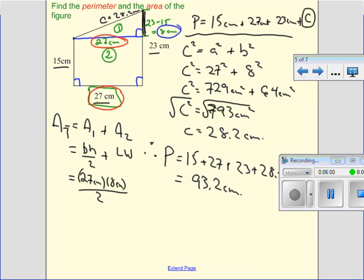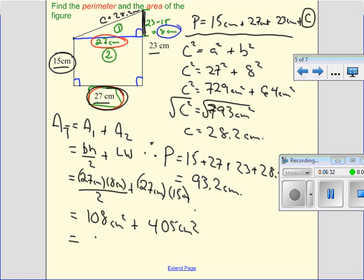So 27 centimeters times 8 centimeters divided by 2, and my width is 15. So 8 times 27 divided by 2 gives me 108 centimeters squared, and 27 times 15 is 405 centimeters squared, or a grand total of 513 centimeters squared as the area for my composite figure.